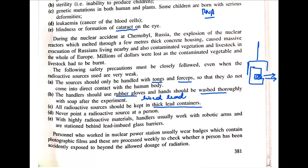Never point a radioactive source at a person — not even as a prank or for humor. This is extremely dangerous and will eventually cause cancer and death. For highly radioactive materials, handlers work with robotic arms. There is also the hazmat suit, which you may have seen as a yellow suit in movies or shows. It is lined with lead and completely sealed so no air can enter or exit. Because it is lead-lined, radiation cannot easily pass through it, making it an effective protective measure when working in a radioactive area.